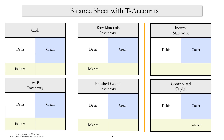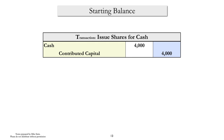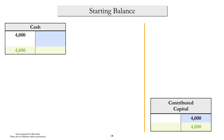Initially none of the accounts have a balance, so to get things started let's assume that we put some cash into the business in exchange for stock. The journal entry you can see now would be something familiar from a financial accounting class, and this is what it would look like posted to the general ledger as T-accounts. Cash has a debit balance of $4,000 and contributed capital has a credit balance of $4,000.